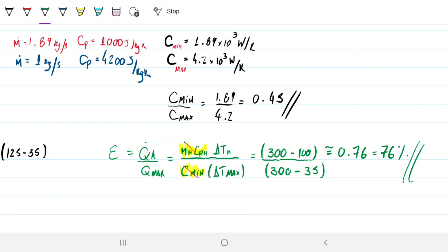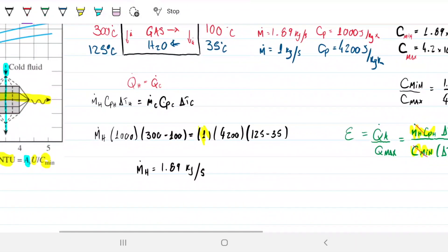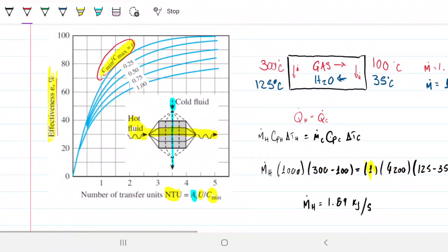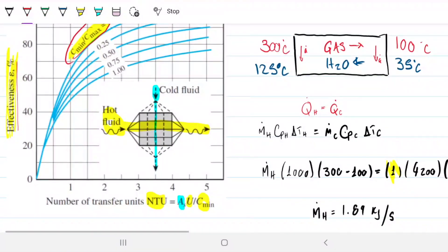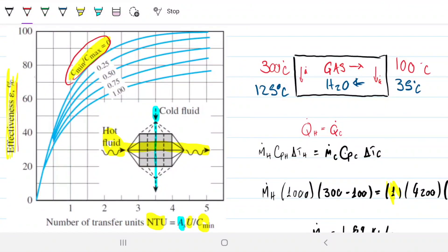So now we can use these two values here, so we're going to combine this information that we have gathered, then we're going to jump into the graph, and we're going to find what is the number of transfer units for this case here. All right, so now I'm using this on the tablet, so it's very hard for me to make straight lines, so do my best.